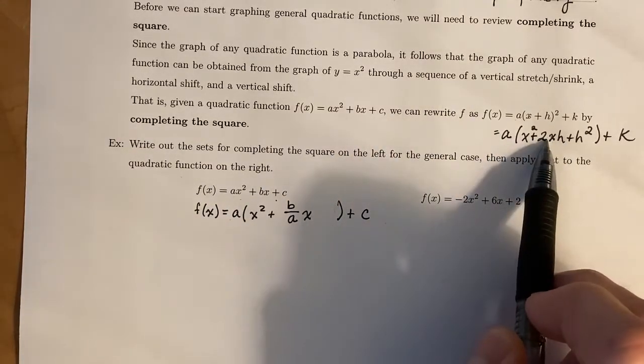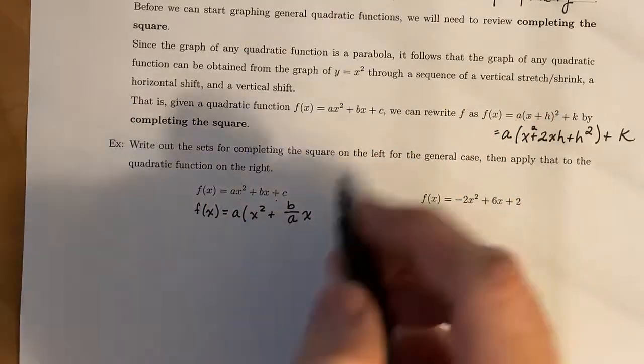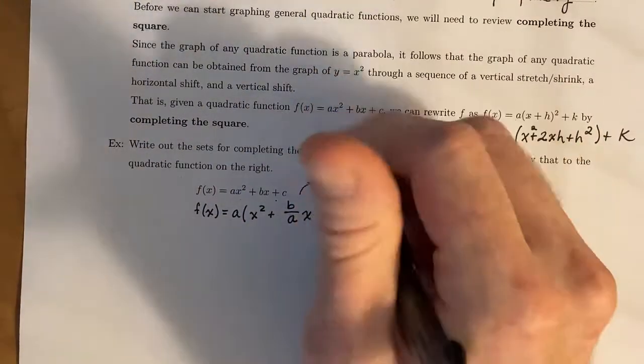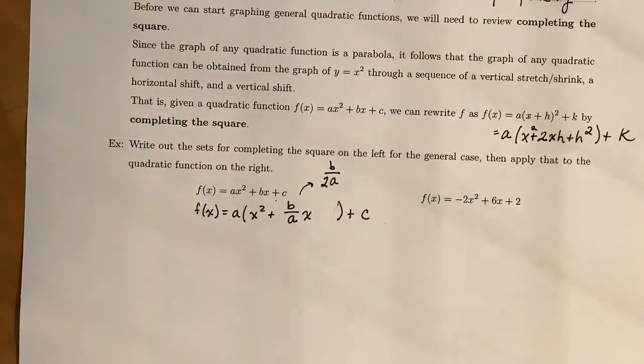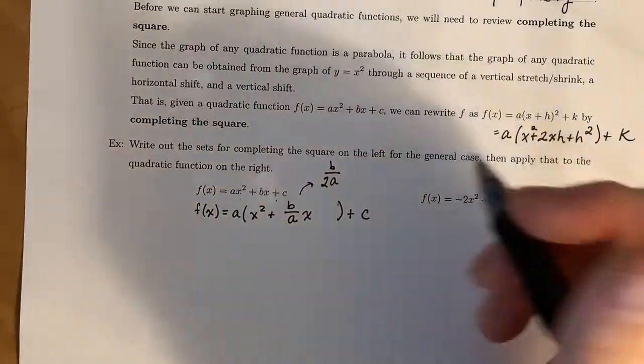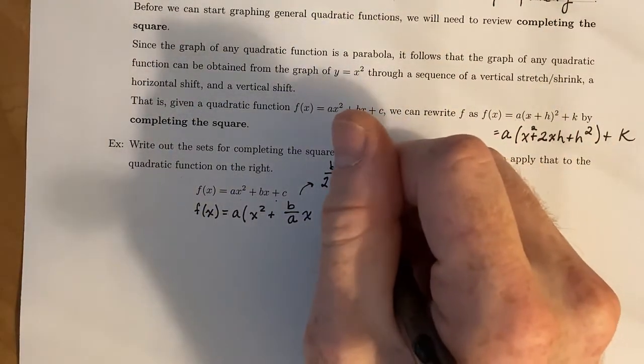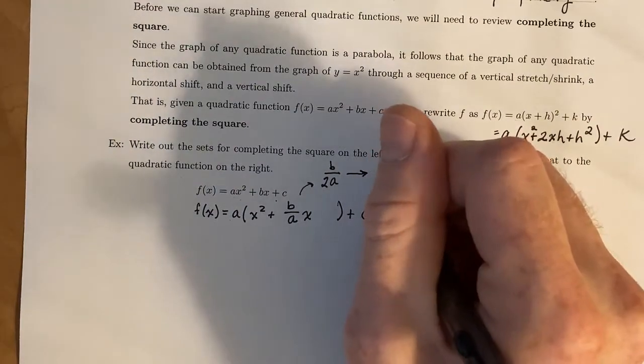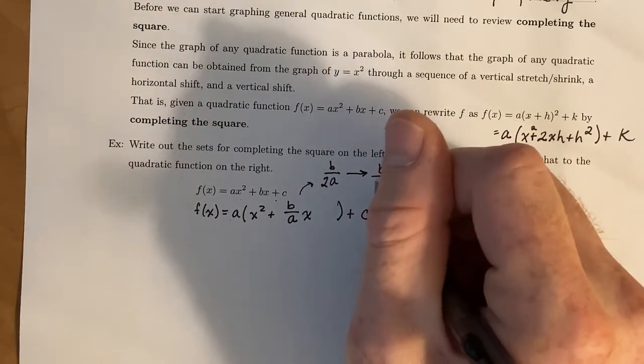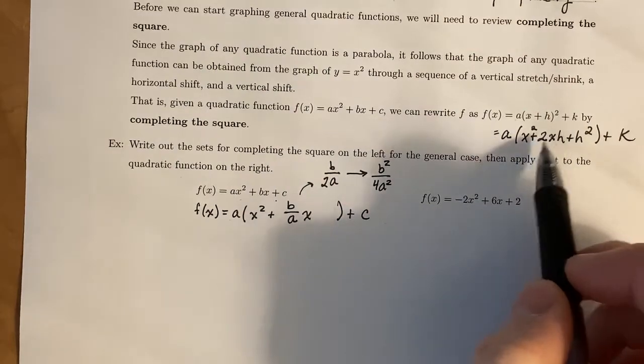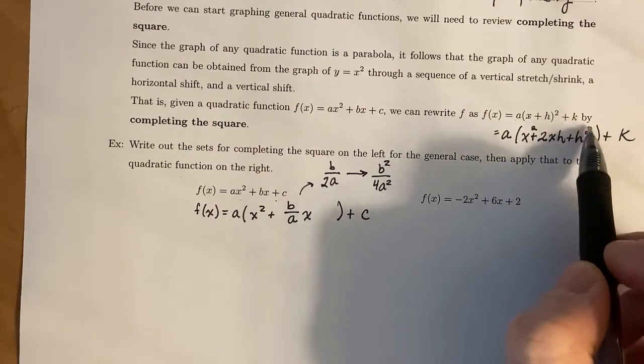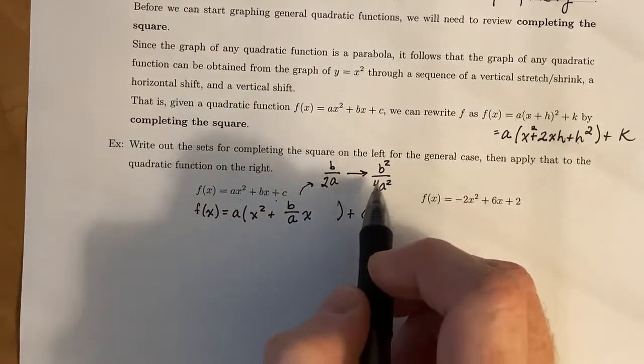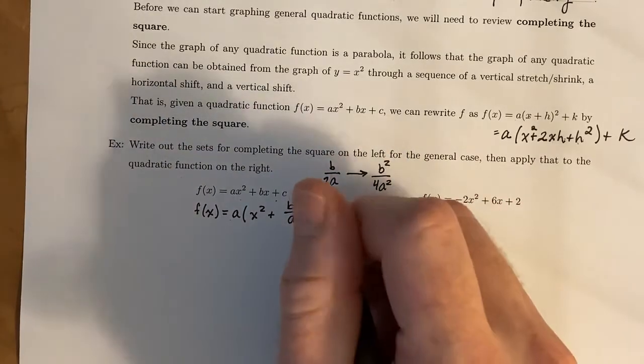Since this 2 popped up when we squared, what we'll do is take the b/a and cut it in half. So we're going to do half of that. And before we add anything to the problem, we're going to square this. Because if you look over here, if you take 2h and divide it by 2, you get h. And then the next term was h². This is the thing that we're going to be adding right here.